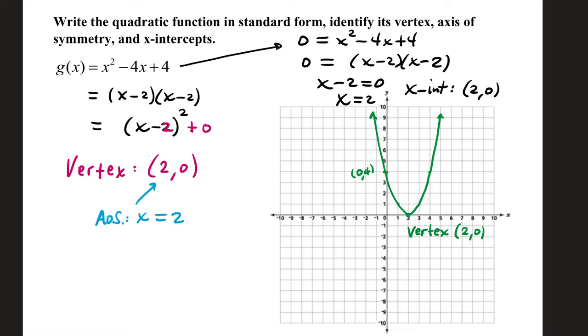X squared minus 4x plus 4, if you factor it, will factor as x minus 2 times x minus 2. Since these factors are identical, you only need to take one of them and solve for x, you get x equals 2. Now in a case of repeated factors, your graph will touch the x-axis instead of cross through it. So your x-intercept is the point (2, 0).